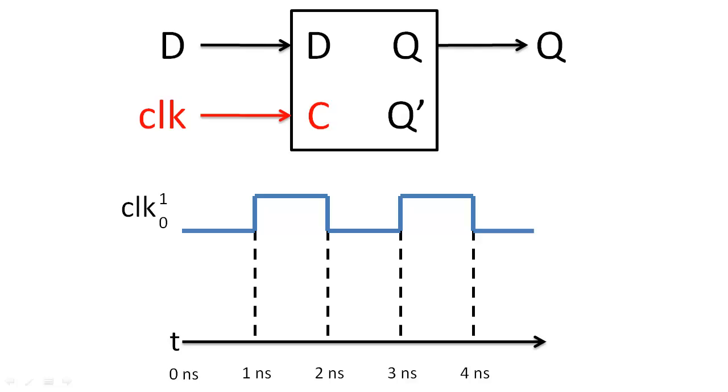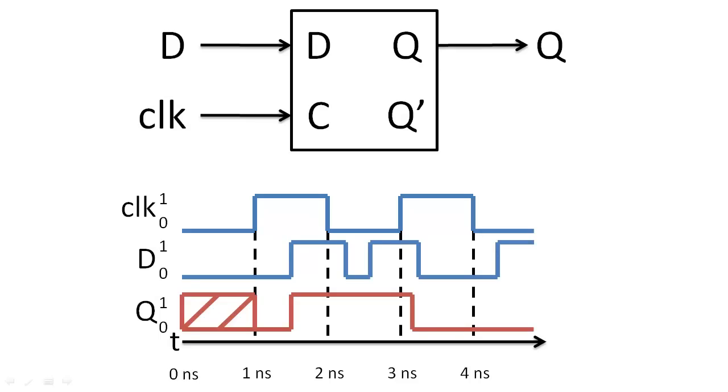For example, suppose that the data input has the following waveform and we want to determine the state of the D latch. Initially, we do not know the state of the flip-flop, but whenever the clock is 1, the latch can change its state and the latch's state will equal the data input. Whenever the clock is 0, the latch will hold its state constant and ignore the data input.